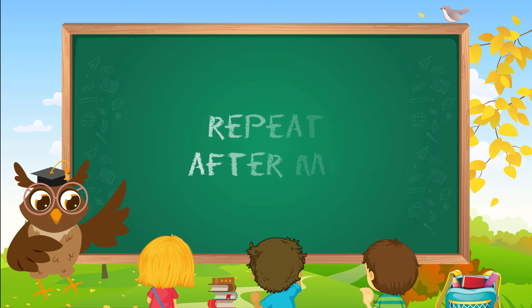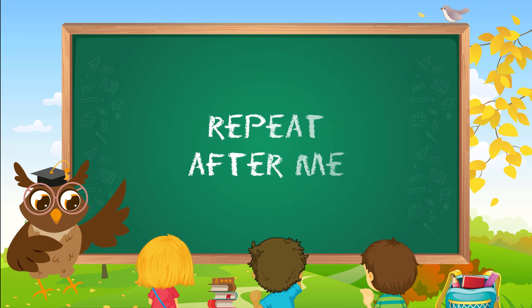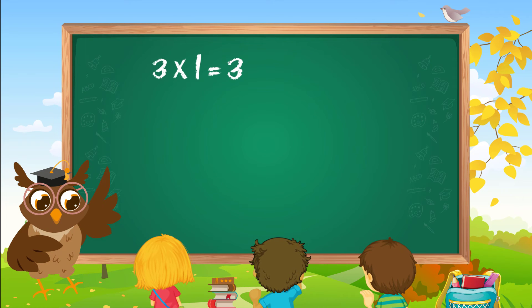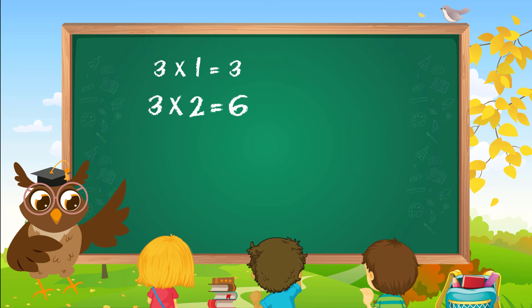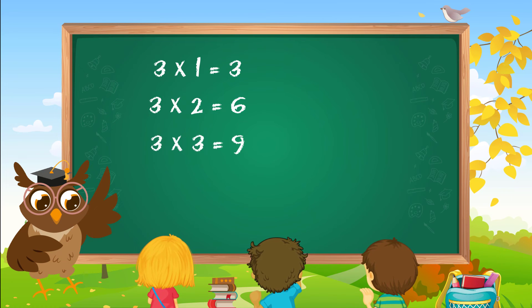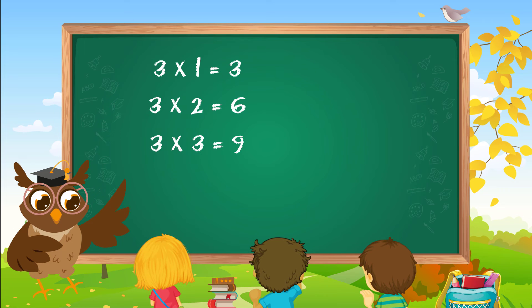Let's do this again. Repeat after me. Three ones are three. Three twos are six. Three threes are nine. Three fours are twelve.